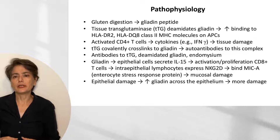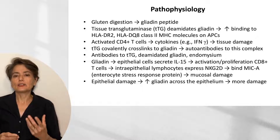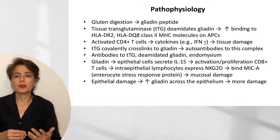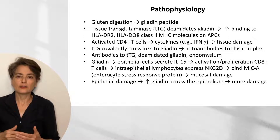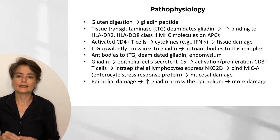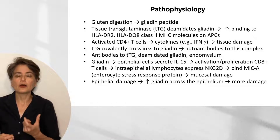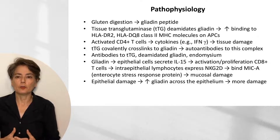These CD8-positive T-cells express a protein called NKG2D, which can bind to a protein called MICA — an enterocyte stress response protein. The epithelium, stressed and irritated by inflammation, is recognized by T-cells as stressed, and they attack that cell, leading to mucosal damage. As mucosal damage increases, it becomes easier for these large peptides to cross the epithelium and regenerate the cycle in the lamina propria.